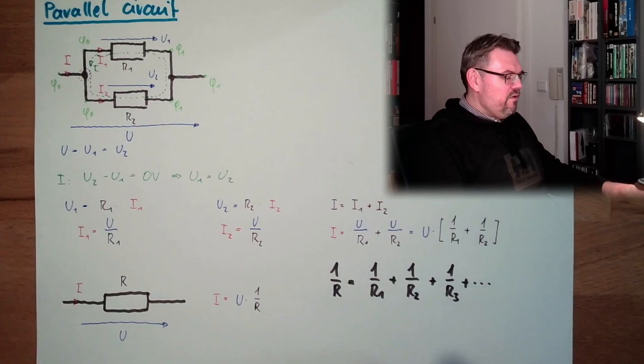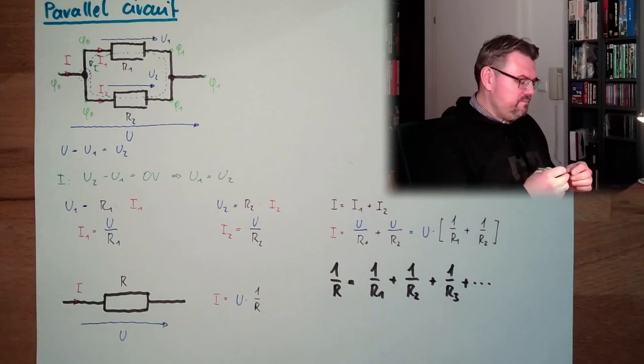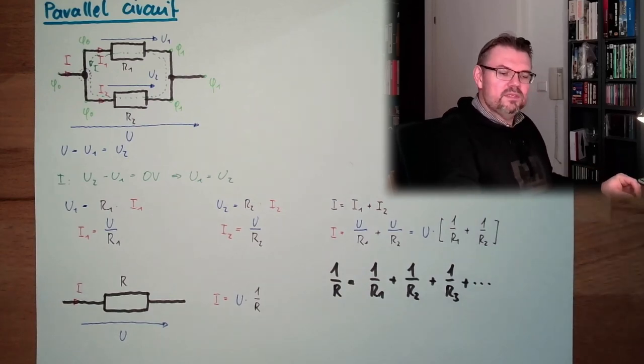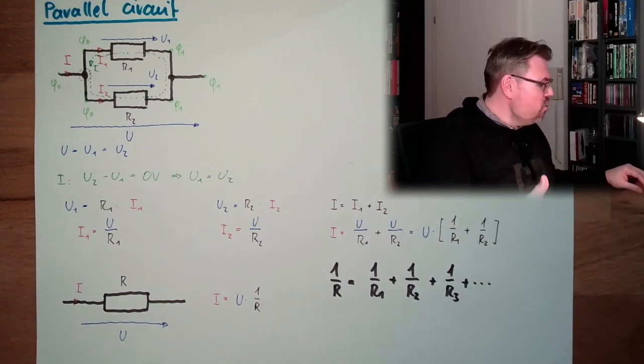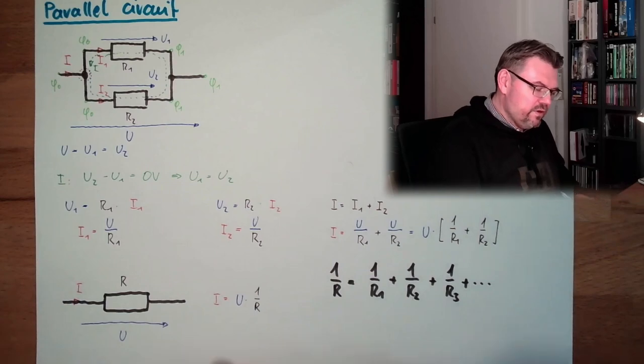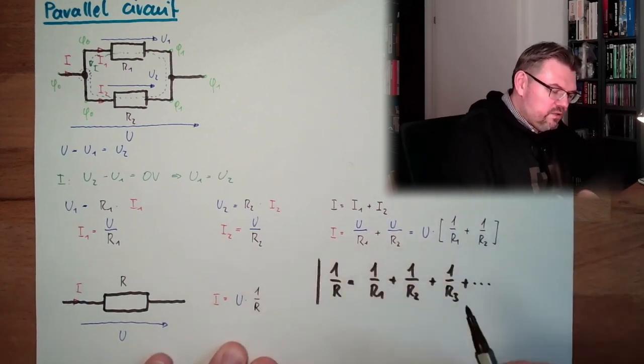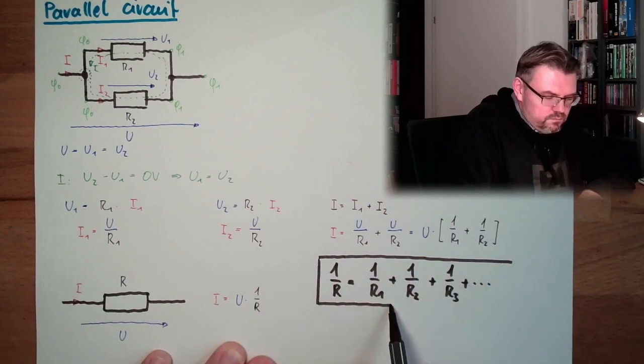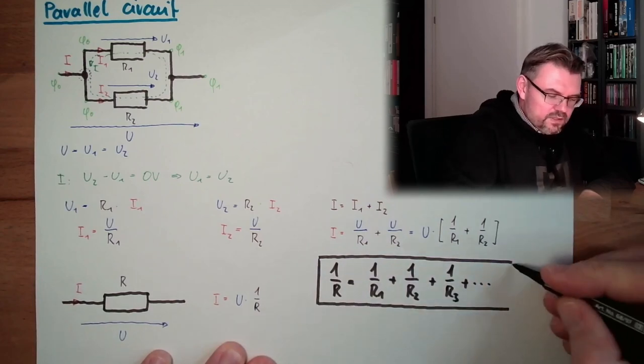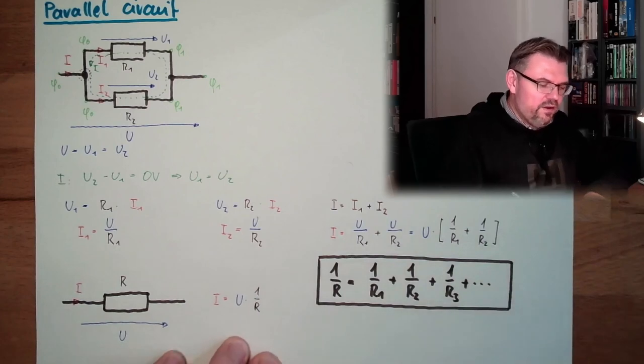And if we would have more than two resistors, we can say plus 1 divided by R3 plus and so on. This is how you calculate replacement resistance, which is not really there, but a replacement resistance for parallel circuit. This is actually what it does. Looks a little bit strange, but this is how it looks like.